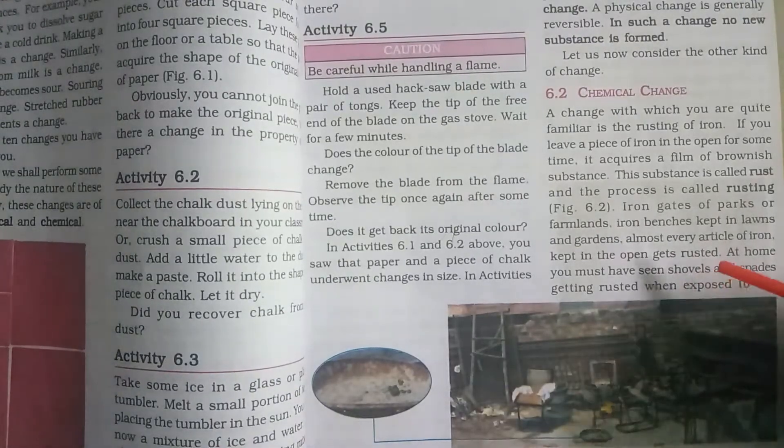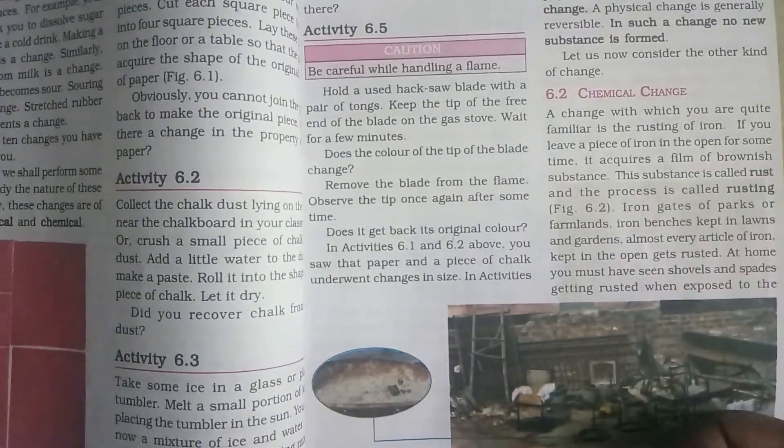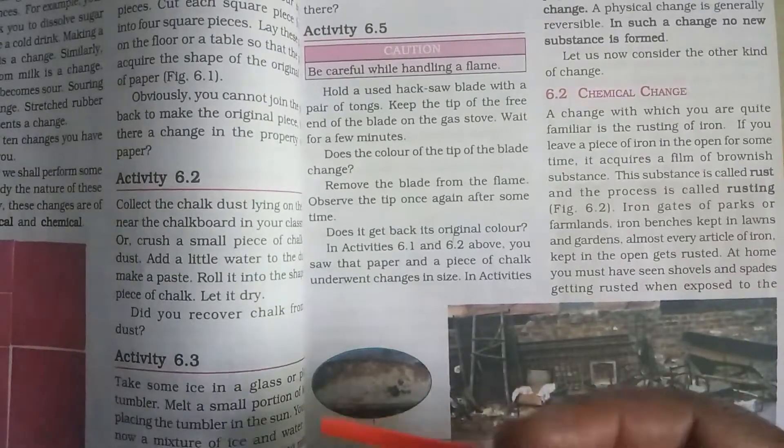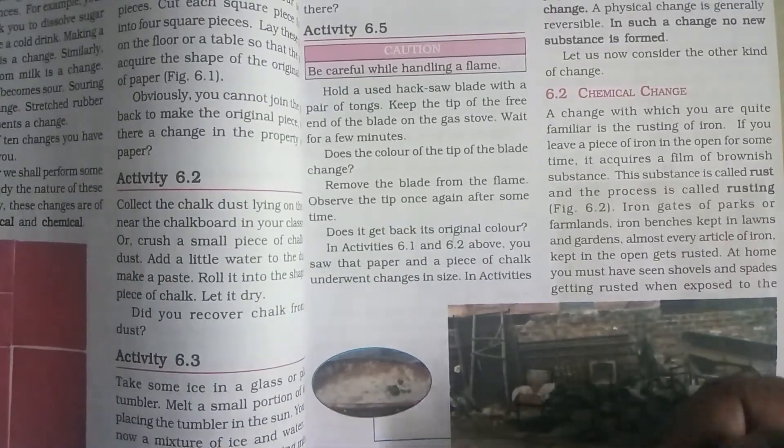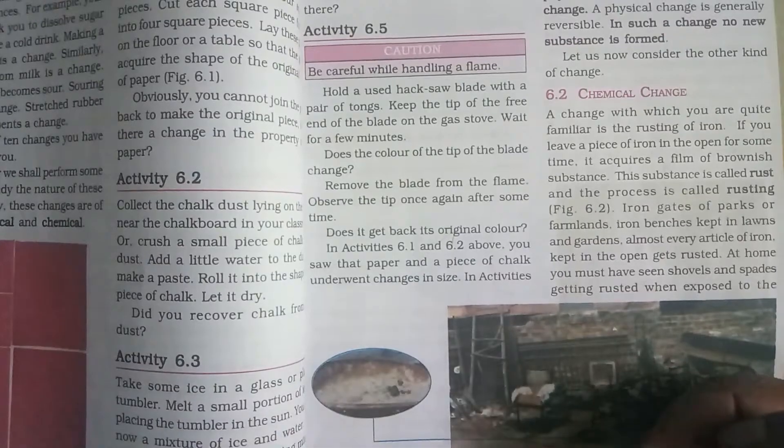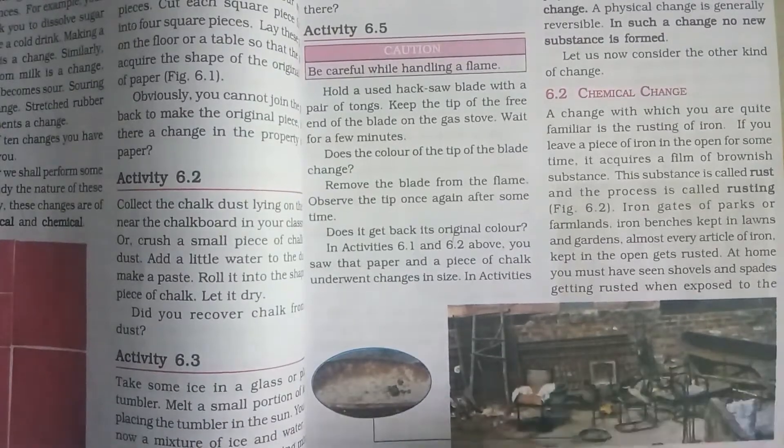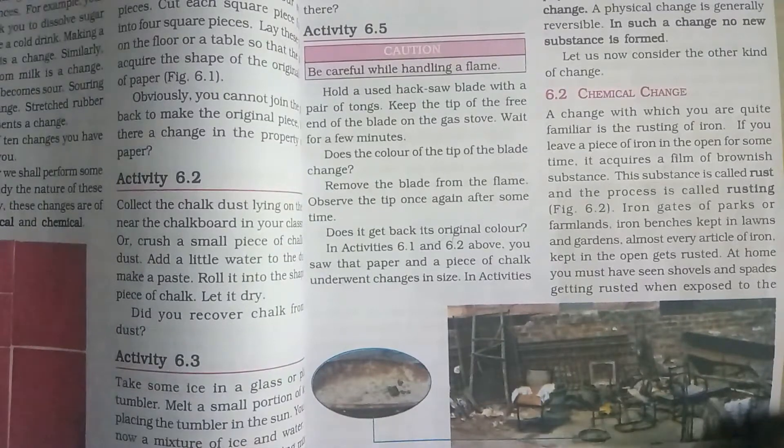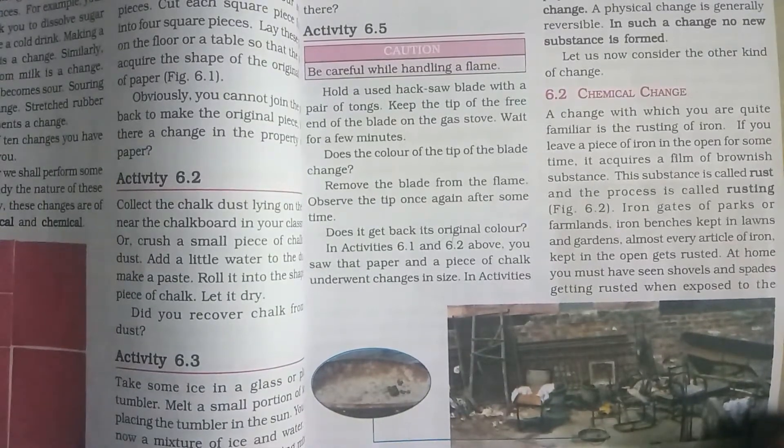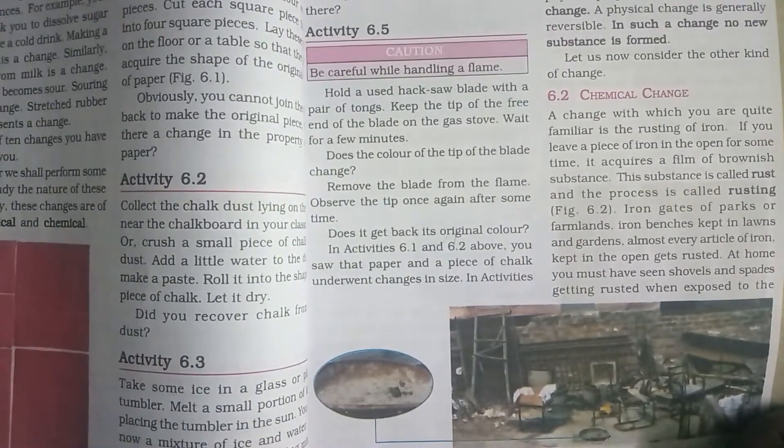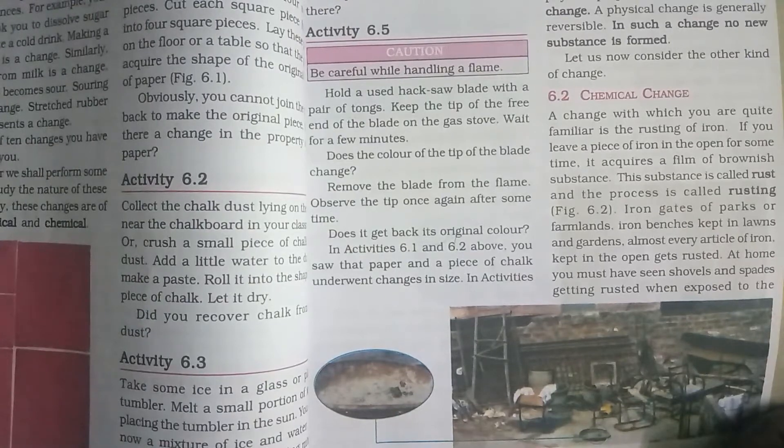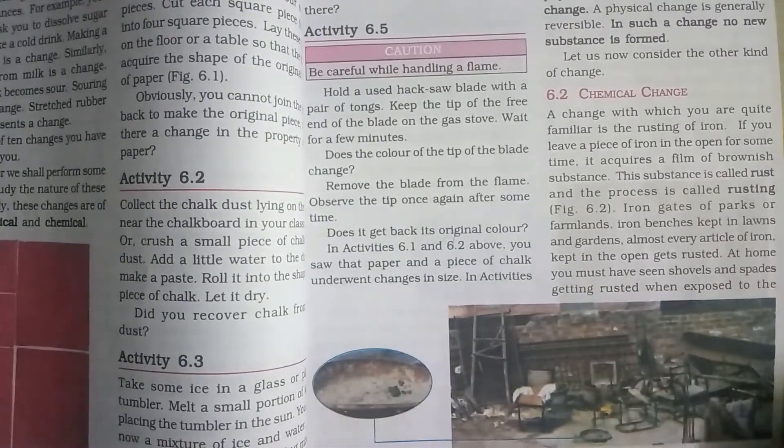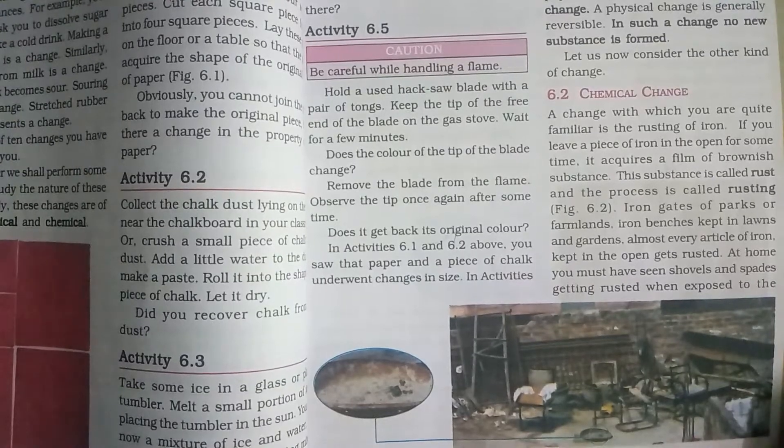Here in the textbook they have taken an iron piece as an example. Take this iron piece and keep it outside the house so that it comes in contact with the atmospheric air. When it comes in contact with the atmospheric air, it forms a layer which will be brown in color.